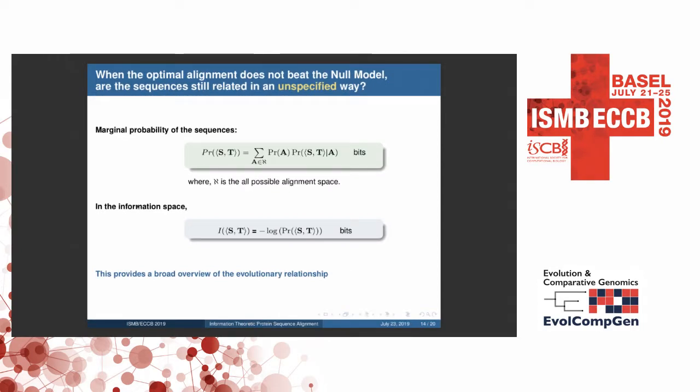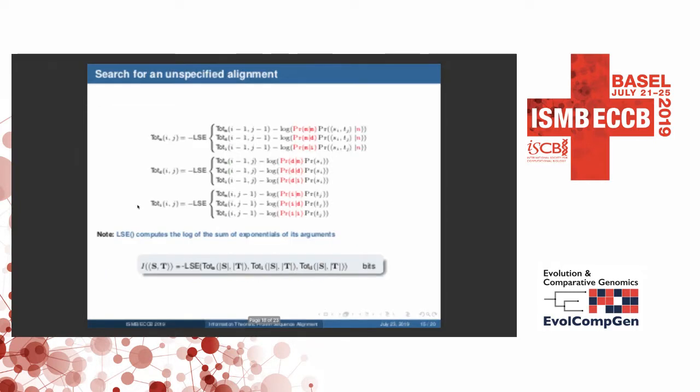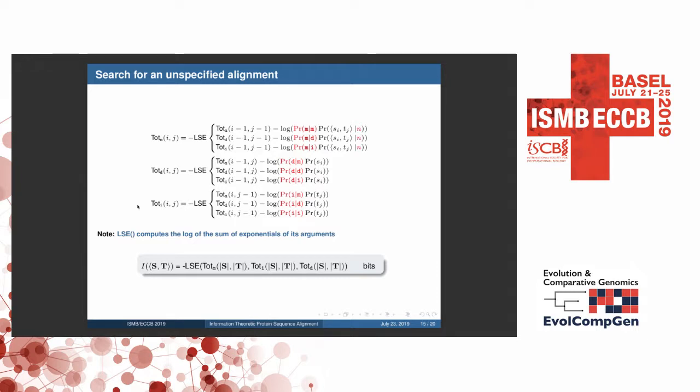Now that we have an optimal alignment, what if this is not the best alignment, and what if it does not beat the null model? In that case, we want to know whether these sequences are actually evolutionarily related in some unspecified manner. For that, what we did was we utilized the total law of probability, which gives us a way to look at these in an unspecified way. So it's this marginal probability between two sequences, whether they are evolutionarily related in some unspecified way. So the marginal probability is simply the, we can actually take it by integrating over the entire alignment space, and we did this in the information space, which provided a broad overview and also a way to find out what's the unspecified alignment model.